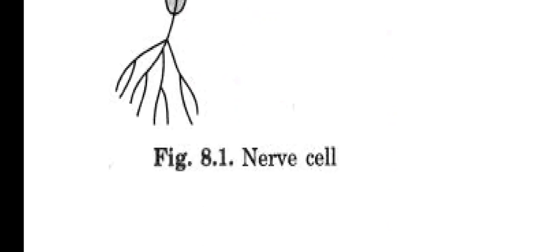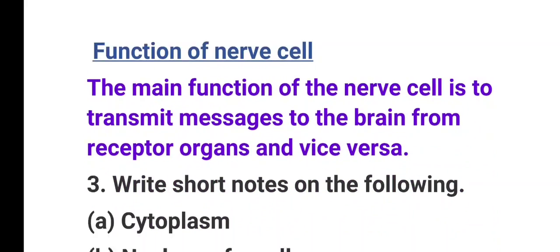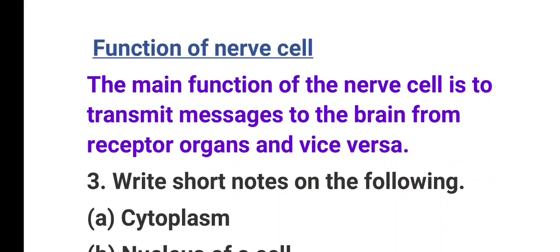The main function of the nerve cell is to transmit messages to the brain from receptor organs and vice versa — transmitting instructions from the brain to the body parts.